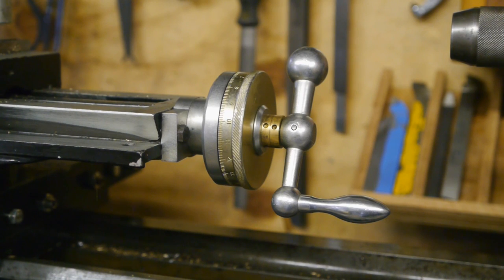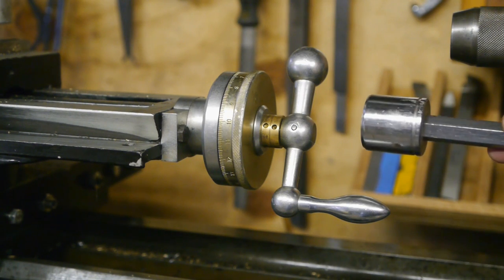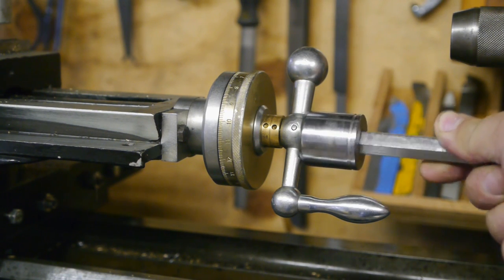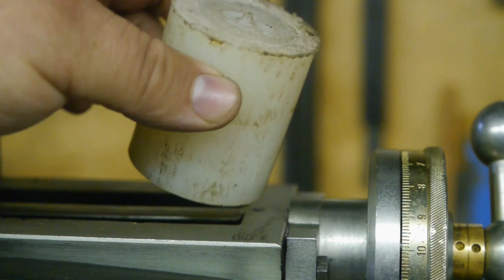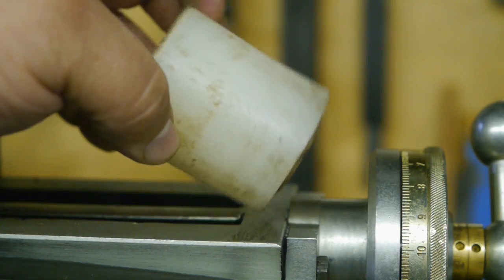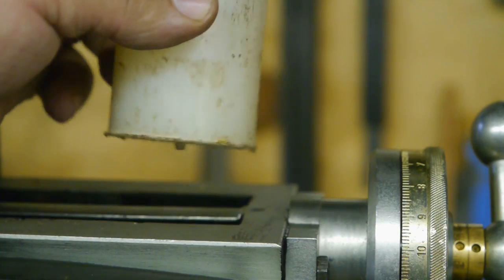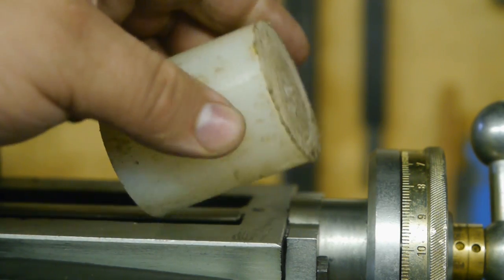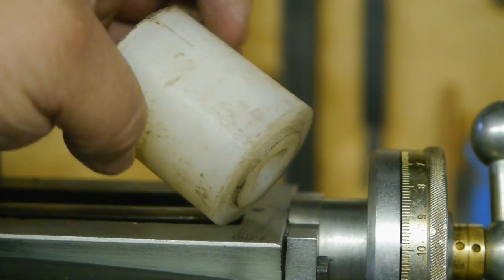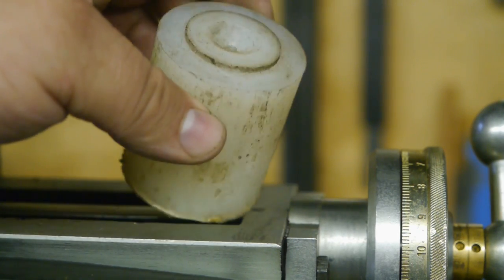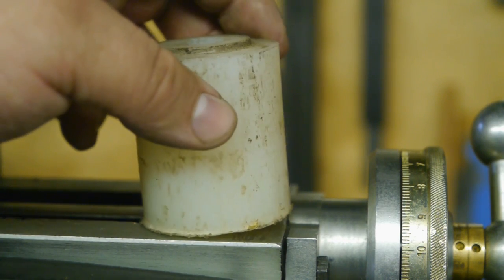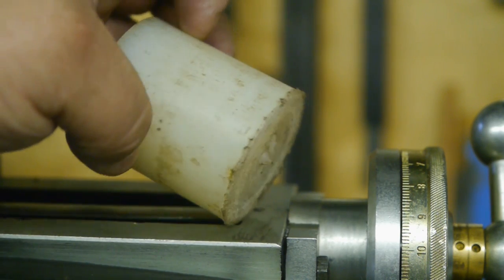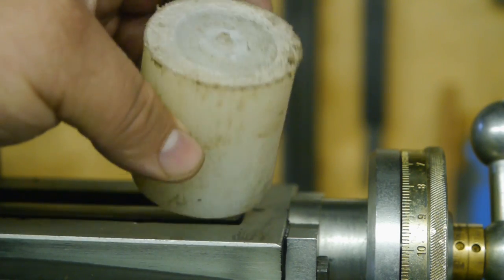Instead of taking the easy route and making the adapter out of an old socket set, I'm going to use this piece of nylon. I haven't machined nylon before, so this is a good excuse to try it out. Besides, nylon won't damage the ball handles and I spent quite a bit of time polishing those up. I would like to keep them nice and shiny for a bit longer.